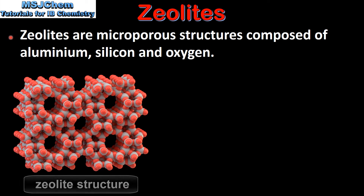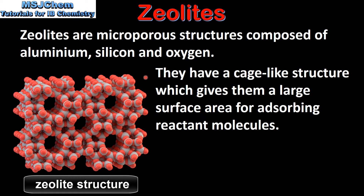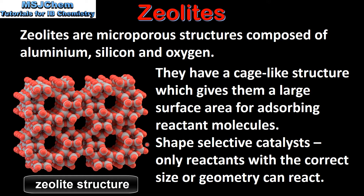We'll start by looking at zeolites. Zeolites are microporous structures composed of aluminium, silicon and oxygen. They have a cage-like structure which gives them a large surface area for adsorbing reactant molecules. Zeolites are shape selective catalysts, which means that only reactants with the correct size or geometry can react.